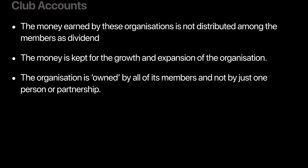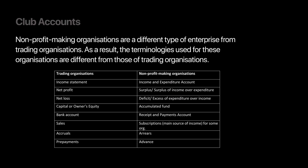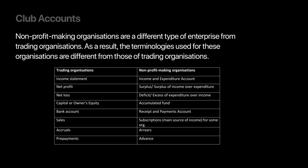Some of the terminologies will change when we are comparing a profit-making organization to a not-for-profit organization. Let's take a look at some of the terminologies you need to get used to. Instead of the word income statement, you should now use the word income and expenditure account. For a not-for-profit organization, the income statement will be called the income and expenditure account.